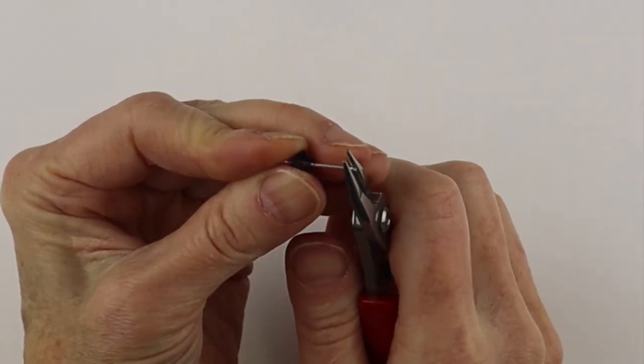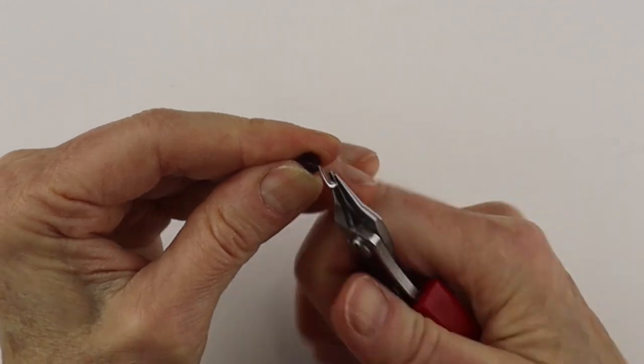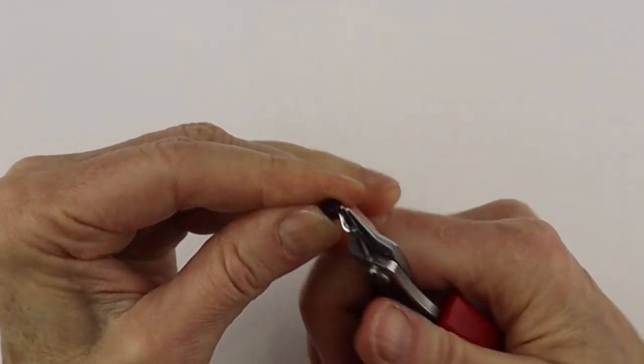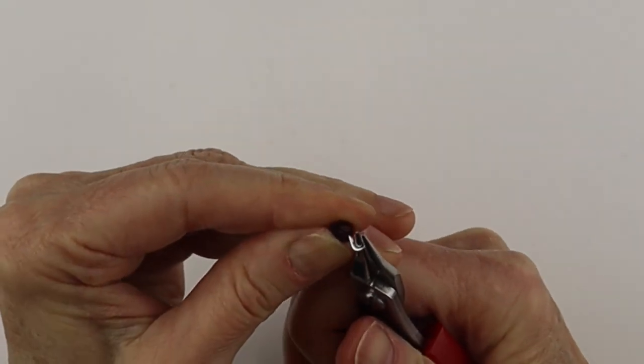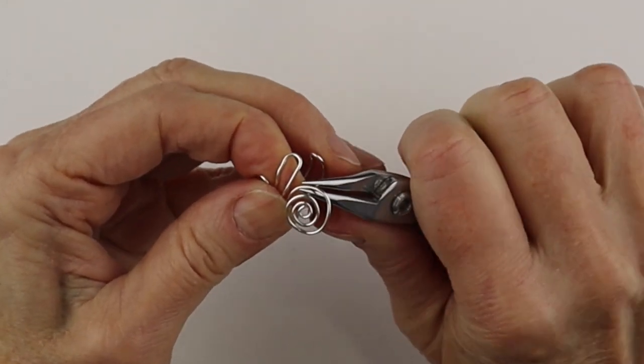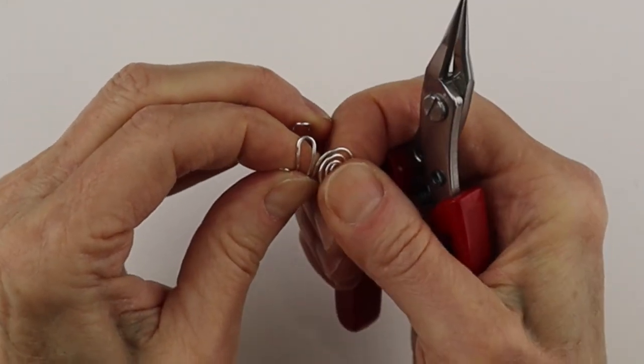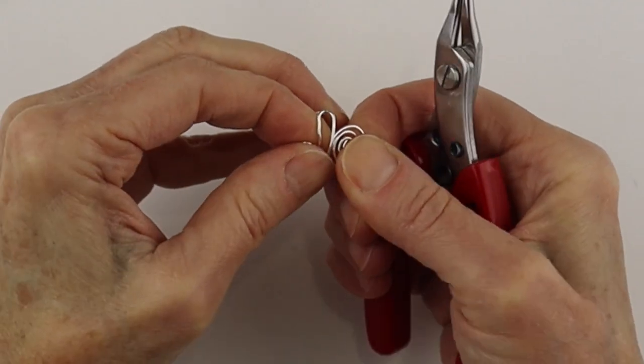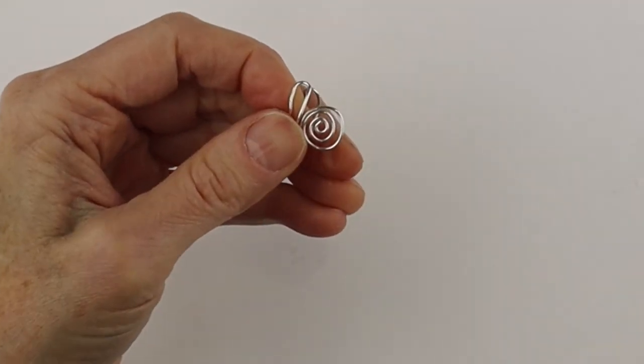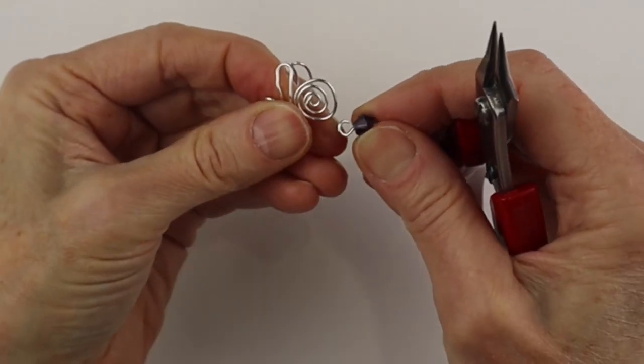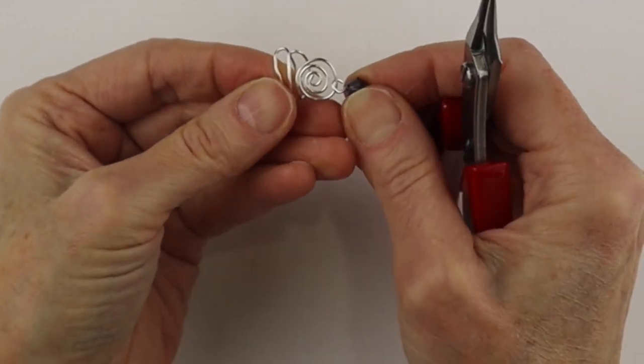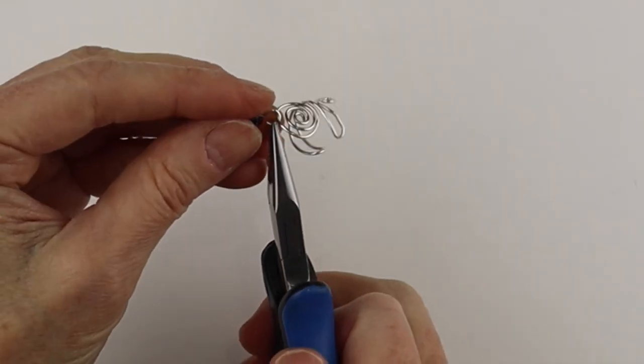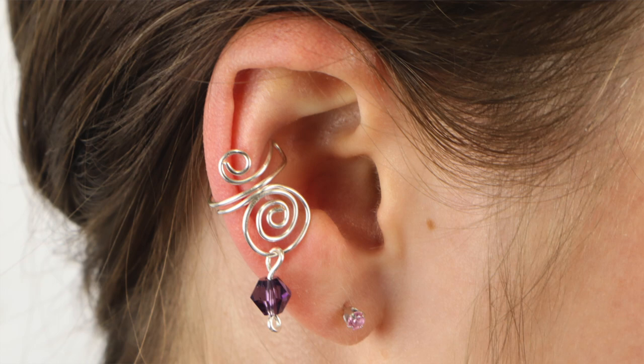Clip it to three eighths to half an inch. Take the end, bend it back and around. Adjust this so part of it's closed. This part here should be closed, there's a little space at the bottom. Put the little bead on the head pin into that space. Close it up. And there you have the ear cuff with a bead.